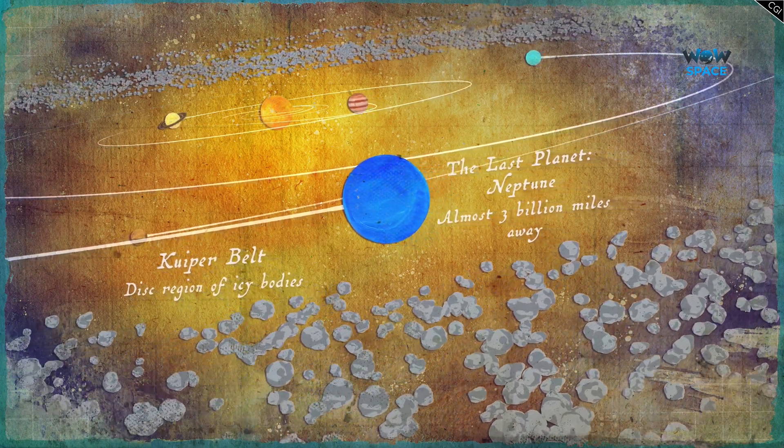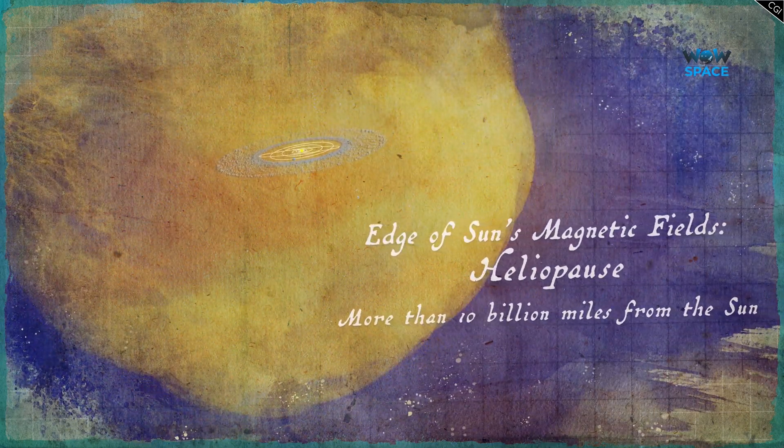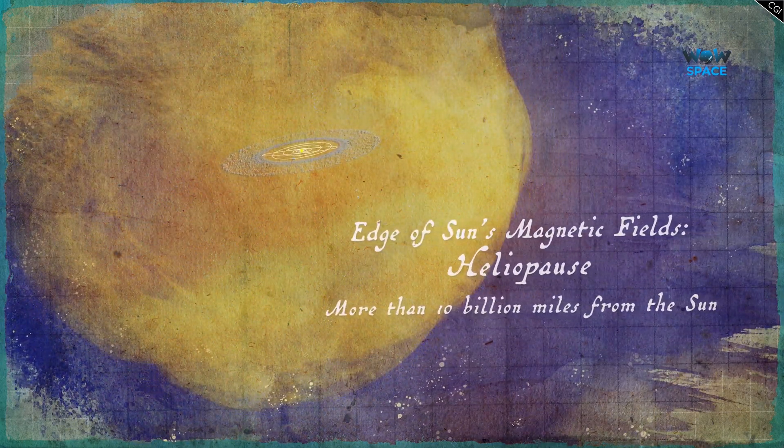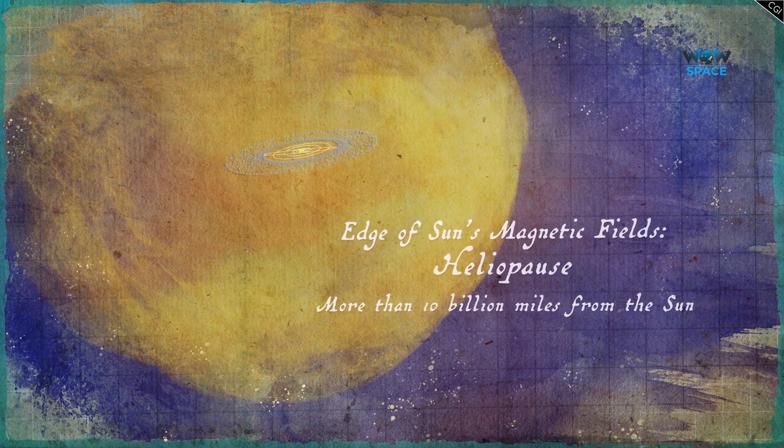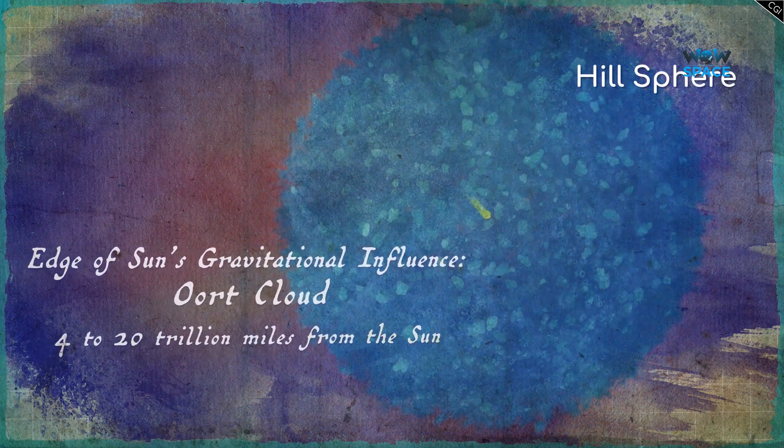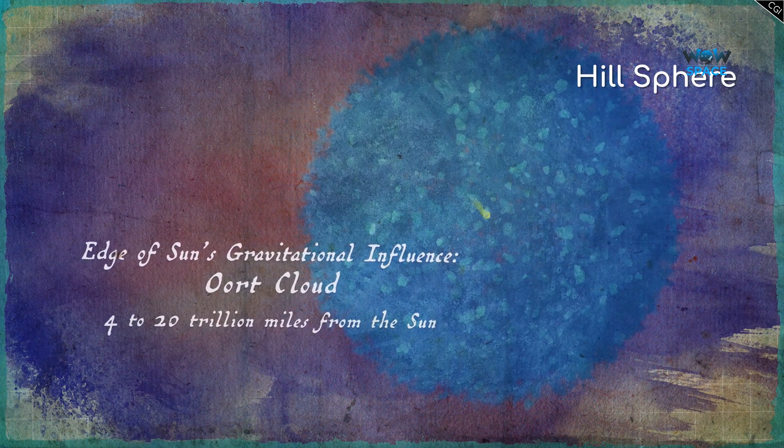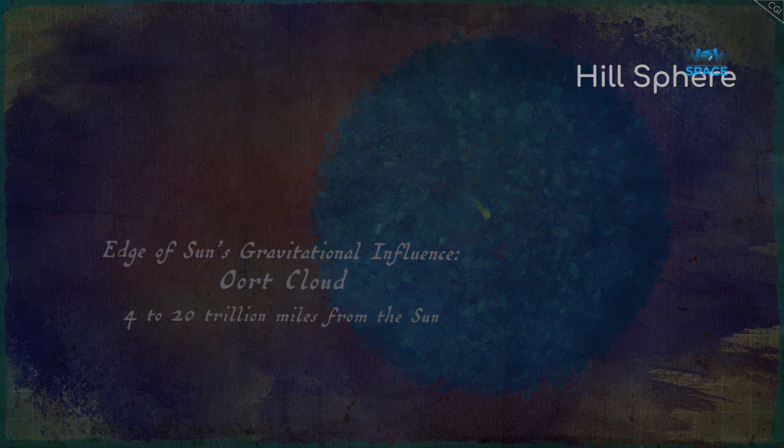But as fantastic as the Voyager mission is, reaching interstellar space is not the same as reaching the edge of the solar system. The edge of the solar system is defined by gravitational influences, a boundary known as a hill sphere. Although it should be noted that this is not really a sphere either, I'll come to that in a bit.